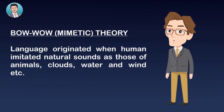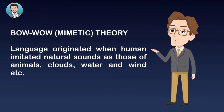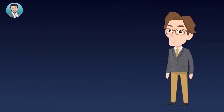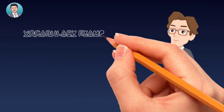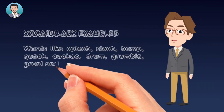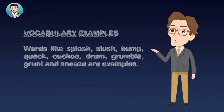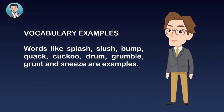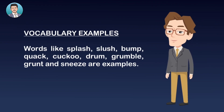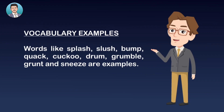There are a lot of words that are examples of this theory. These words are: splash, slush, bump, cock, toot-toot, drum, grumble, grunt, and sneeze. These words are very good examples of onomatopoeia related to this theory.